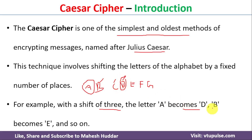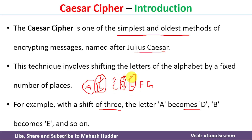Similarly, for the letter B, it will become E, because here it is the letter B and from this we need to shift 3 times, so the encrypted letter will be E.